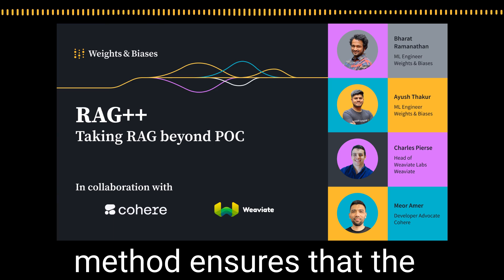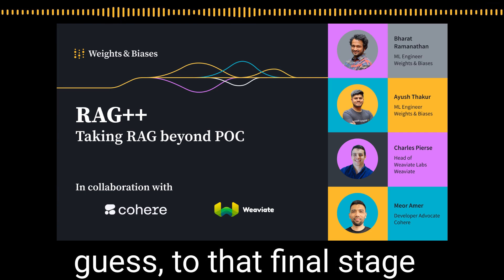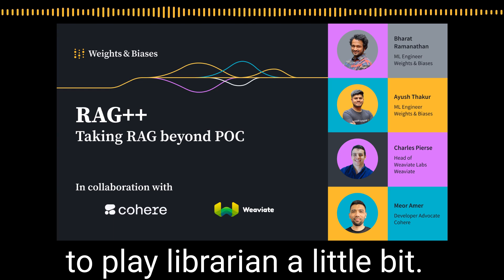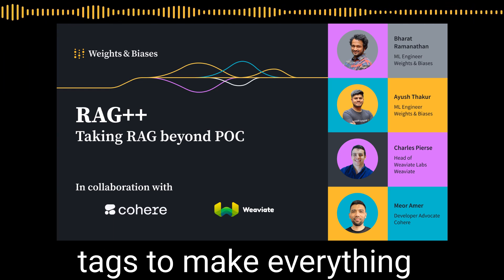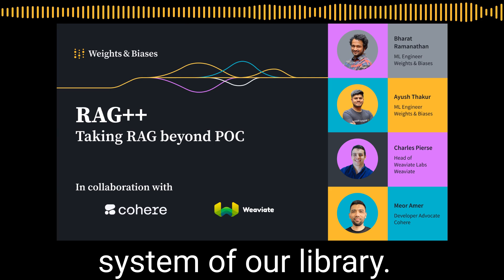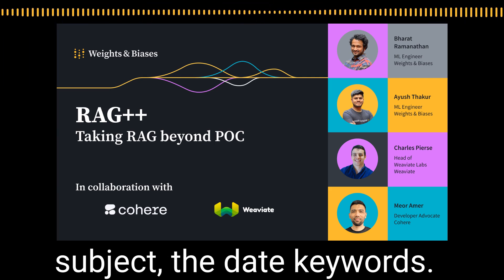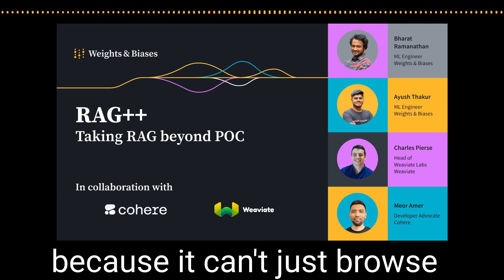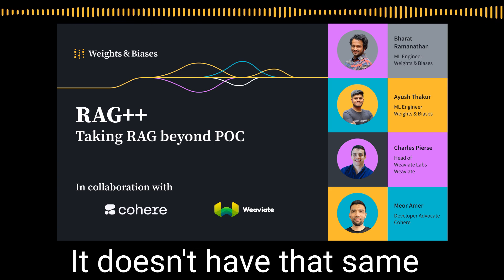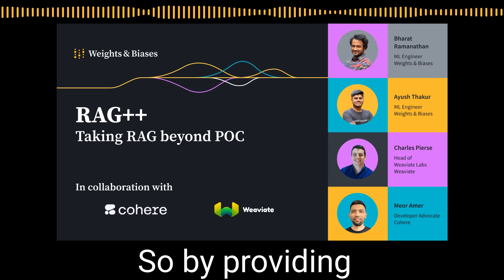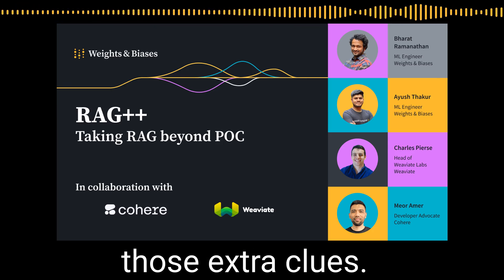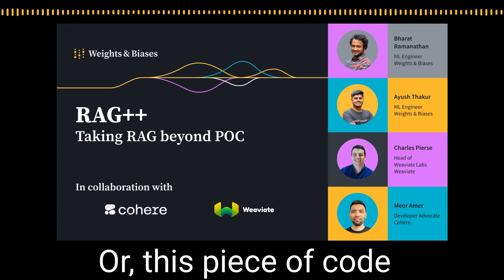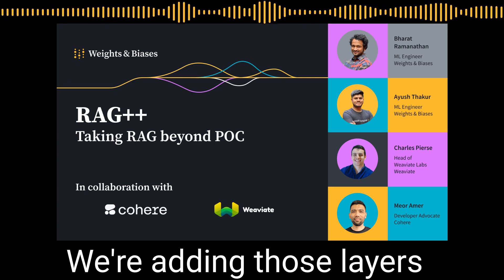That brings us to the final stage of data ingestion: metadata management. This is where we get to play librarian — adding all those labels and tags to make everything easily searchable. It's like the card catalog system of our library: the author, subject, date, keywords that help us find exactly what we're looking for. By providing this rich metadata, we're giving the AI extra clues — saying things like 'this information comes from a peer-reviewed scientific journal' or 'this piece of code is relevant to version 3.2 of the software.' We're adding layers of context and credibility.